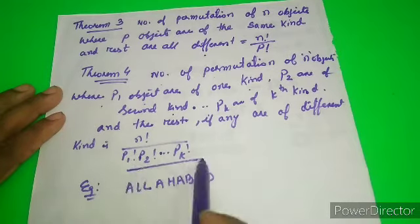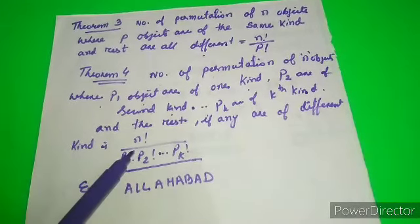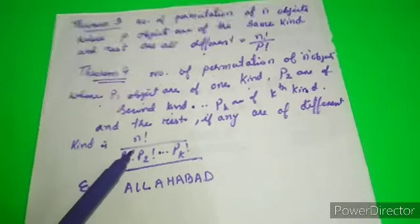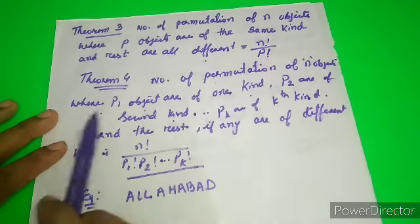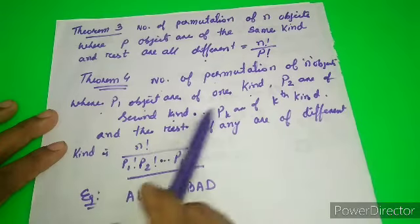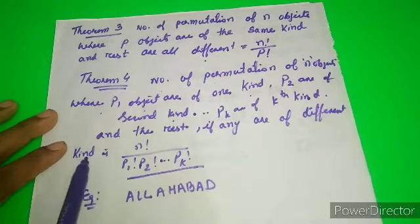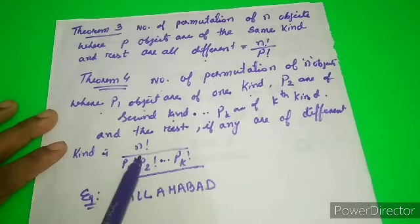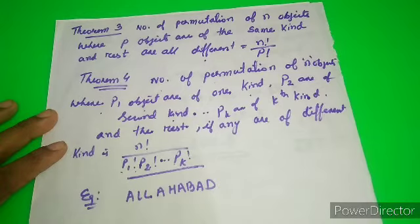The formula is n factorial divided by p1 factorial times p2 factorial times pk factorial. So for n objects where p1 are of one kind, p2 of a second kind, pk of kth kind, and the rest are different, the permutations equal n factorial divided by p1 factorial, p2 factorial, dot dot dot, pk factorial.